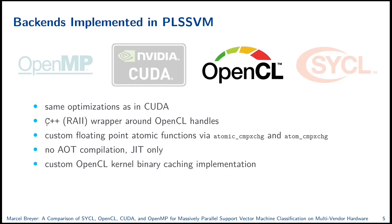For our OpenCL backend, we employed the same optimizations as in CUDA. We wrapped all OpenCL handles in C++ wrapper classes to reduce potential memory leaks. We implemented custom floating point atomics, since they are not standardized in OpenCL directly. However, in contrast to CUDA and SYCL, OpenCL does not use ahead-of-time compilation — it only uses JIT compilation during runtime. We also implemented a custom OpenCL kernel binary caching scheme, because the OpenCL built-in caching failed on some hardware platforms.